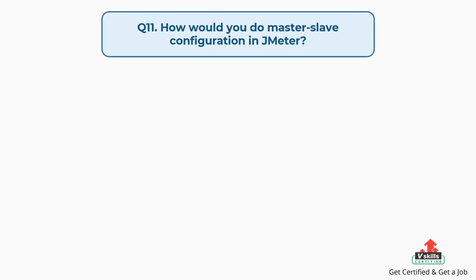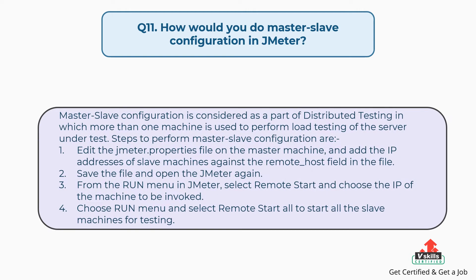Question 11: How would you do master-slave configuration in JMeter? Master-slave configuration is part of distributed testing where more than one machine is used for load testing. Steps: edit the jmeter.properties file on the master machine and add IP addresses of slave machines against the remote_host field; save the file and reopen JMeter; from the Run menu, select Remote Start and choose the IP of the machine to invoke; then select Remote Start All to start all slave machines for testing.